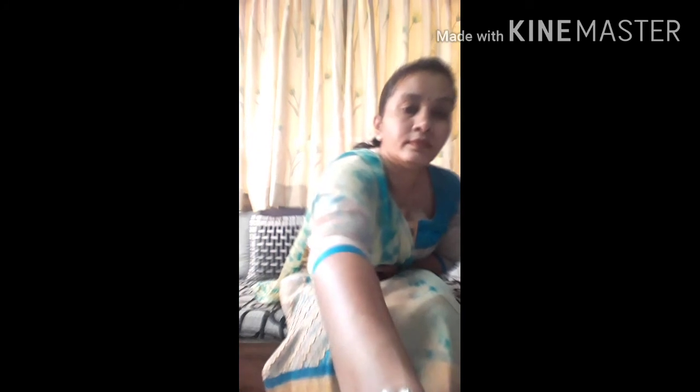Now children, we are going to take information about the Sikhs. Guru Tegh Bahadur protested against the policy of religious intolerance of Aurangzeb. He was imprisoned and afterwards beheaded in 1675 CE. Guru Gobind Singh organized the Sikh youth into the Khalsa Dal to fight with Aurangzeb. However, they did not succeed. Later, Guru Gobind Singh succumbed to his wounds in Nanded.